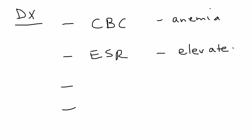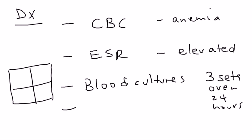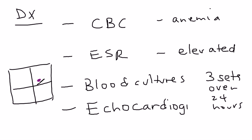But the next two are really the specific ones. Blood cultures — you need to identify the bacteria, and that's done with blood cultures, usually three sets over 24 hours. And finally, you need to visualize the organism vegetation that's sitting on the heart valve. It would be visualized by the echocardiogram. So the echocardiogram is the diagnostic test to visualize the vegetation, and blood cultures is what you do to isolate and identify the actual organism.